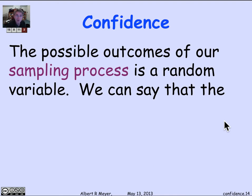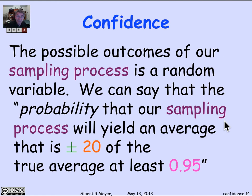Our measurements are random. So the right thing we can say is that the possible outcomes of our sampling process can persuasively be modeled as a random variable. What we can say is that the probability that our sampling process will yield an average that's within 20 of the true average is at least 0.95.